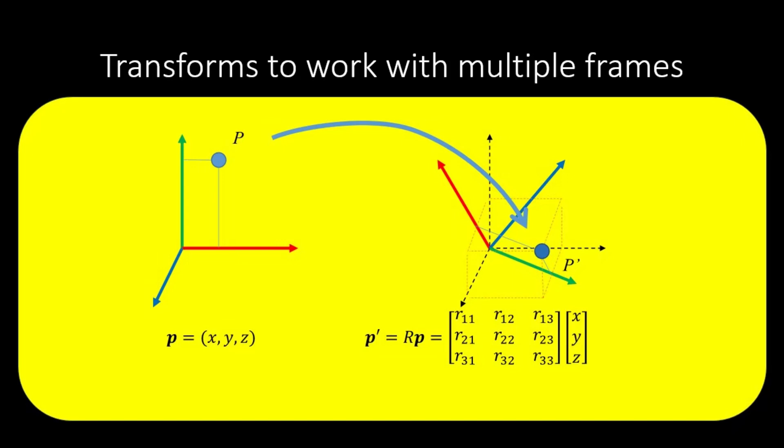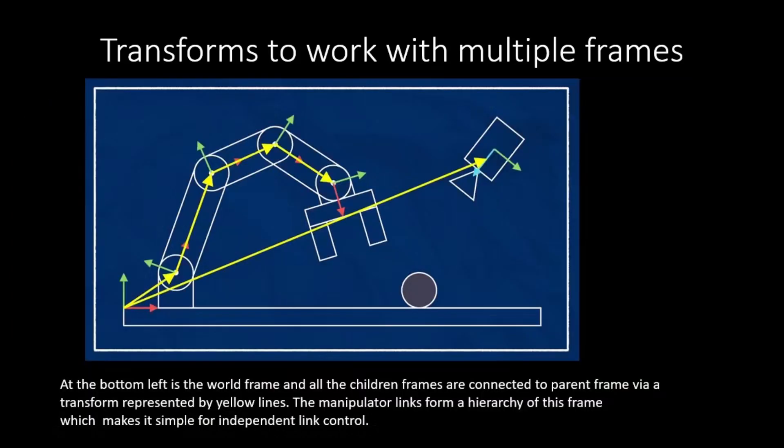Mathematically, there are various ways to represent or use a transform. The standard is to define a world coordinate frame and store transforms of each of the coordinate frames we need to use according to the world frame. To simplify complex systems, we create hierarchy of these subsystems where we store child's frames transform with respect to parent frame. So it's easier to work with the context and localizing the objects with respect to world in case the parent's state changes.